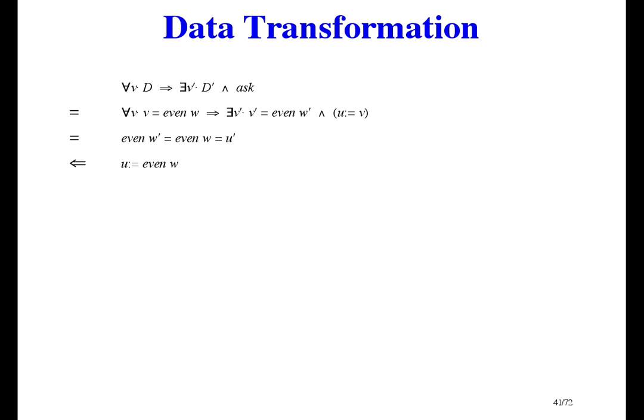Finally, we transform ask. That line says u prime should be equal to even of w, so the user's variable will tell if the implementer's variable is even or odd. It also says even w prime equals even w, meaning we can change the value of w as long as we don't change whether it's even or odd. The sensible thing to do is leave it alone. Data transformation always produces the specification that shows you all the possibilities. These two examples were very small — the simplest ones I could think of — so the result of the transformations was obvious. But you should imagine large data structures and transformations that aren't obvious. It works there too, and shows you possibilities you may not have been aware of.